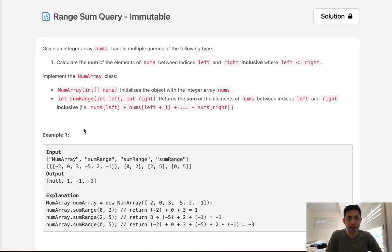Welcome to August's LECO Challenge. Today's problem is range sum query immutable. Given an integer array nums, handle multiple queries of the following type. Calculate the sum of the elements of nums between indices left and right inclusive where left is less or equal to right.